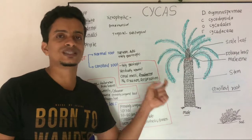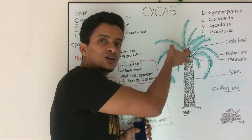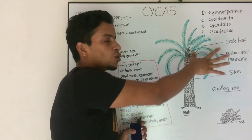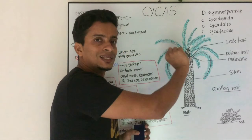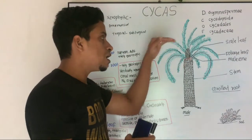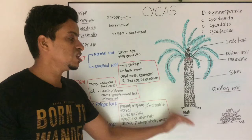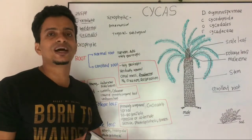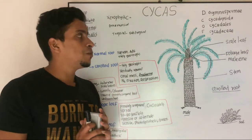In male cone, microsporophylls are compactly arranged in a compact structure. But in female cone, megasporophylls are loosely arranged. This is how you can separate the male plant and female plant.